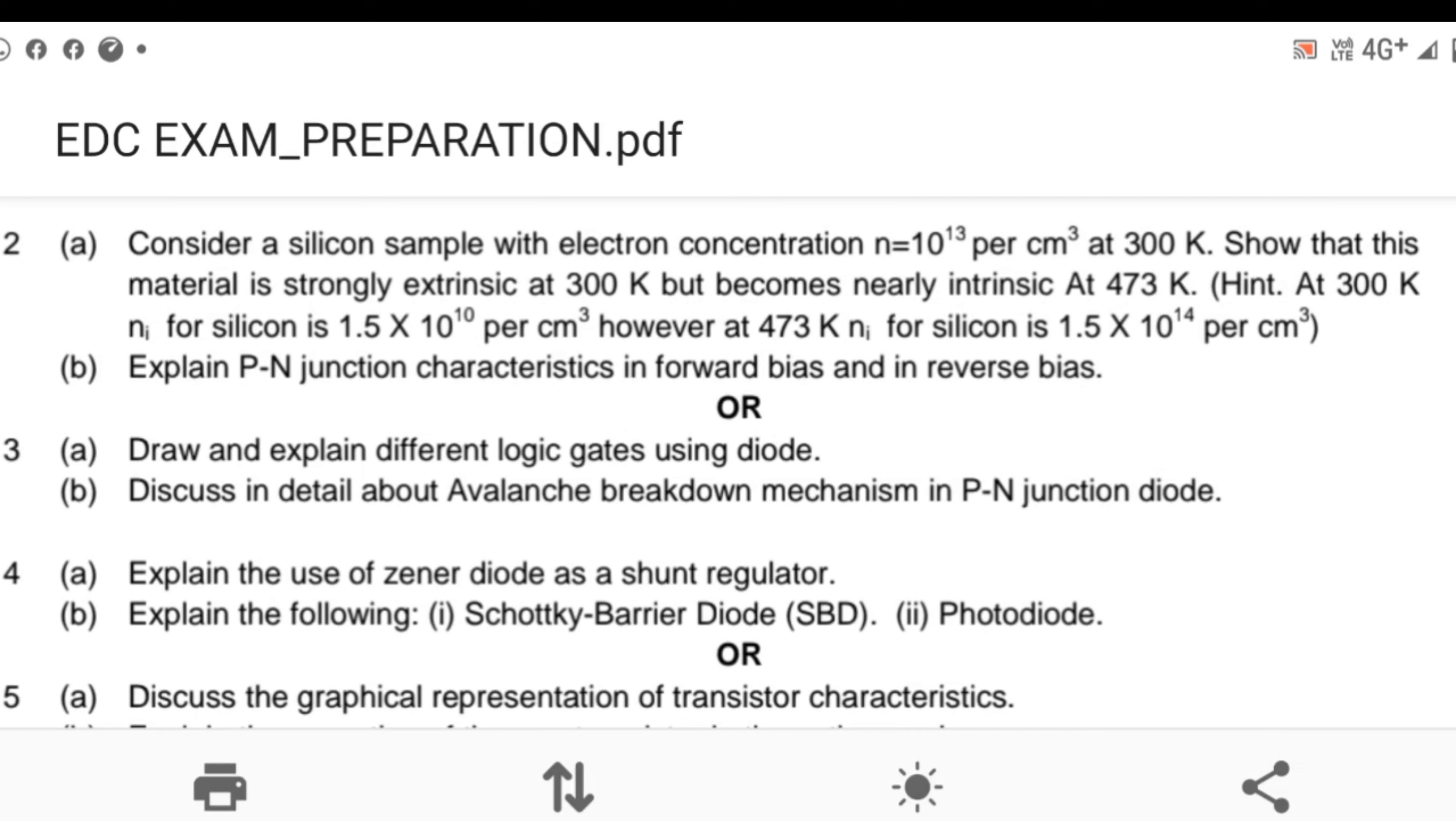Explain the following: Schottky barrier diode, SBD and photodiode. The Zener diode acts as shunt regulator, why?